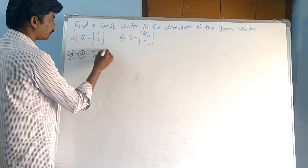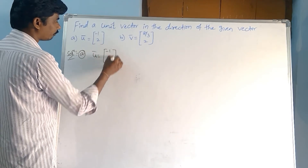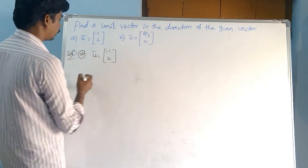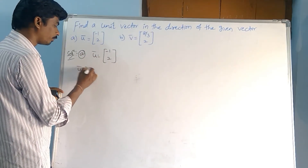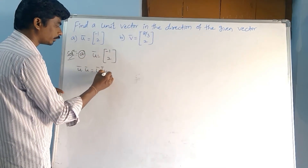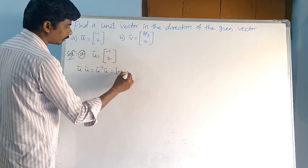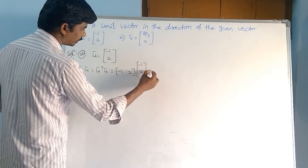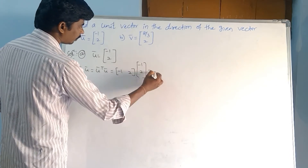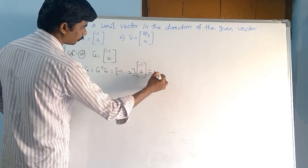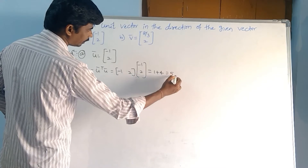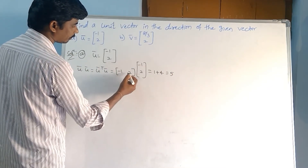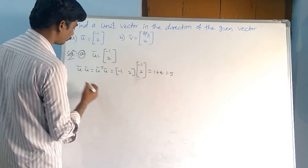u̅ equals (-1, 2). What we find here is the unit vector in the direction of u̅. We compute u̅ dot u̅, which is u̅ transpose into u̅: (-1, 2) times (-1, 2) equals 1 plus 1 plus 4. That equals 5. So (-1)(1) + (2)(2) = 1 plus 4 equals 5.